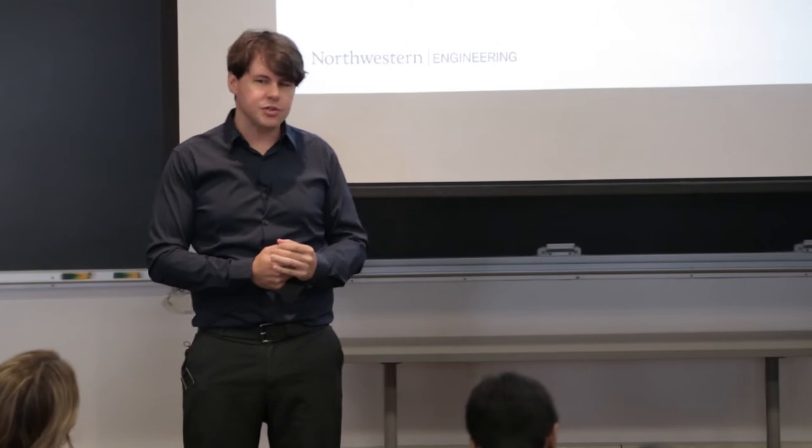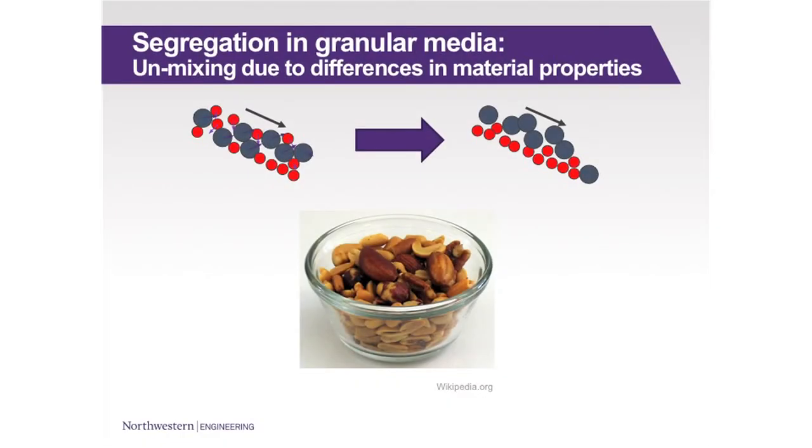So I mentioned that my research was based on segregation. And so what I mean by that is the unmixing or the separation of particles as they're flowing. So in this example, we have large blue particles and small red particles. They start initially mixed, but when they're flowing down a hill, they'll separate to where the large blue particles will float to the surface and the small red particles will sink to the bottom. And then at the bottom of the hill, you have two layers of particles.